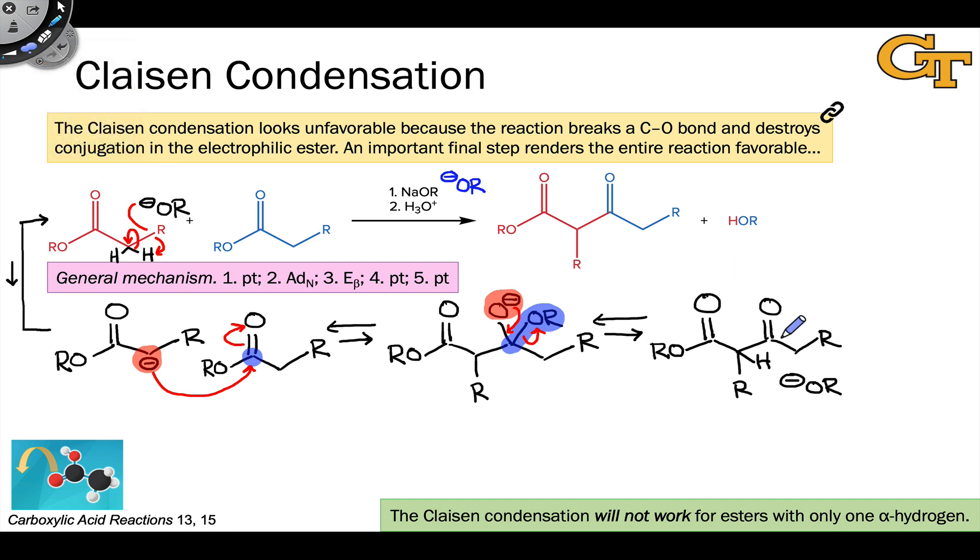There's an acidic hydrogen linked to the alpha carbon between the two carbonyl groups, the doubly alpha carbon. Now that we've attached a second acyl group to the alpha carbon of the original ester, we've acidified that carbon substantially. That hydrogen is now much more acidic than the hydrogen of an alcohol. The pKa is typically around 8, whereas the pKa of an alcohol is around 15.